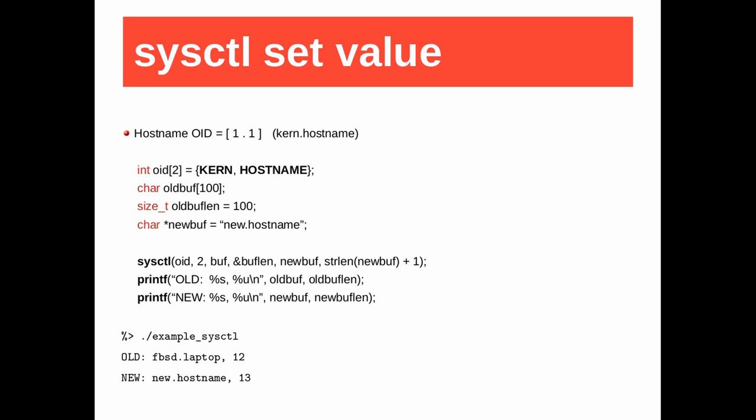Now an example to show how to set a new value — again the hostname. Now the last arguments are not null and zero, but are the value of the new hostname and its size. You can see the old and new value at the bottom of the slide.